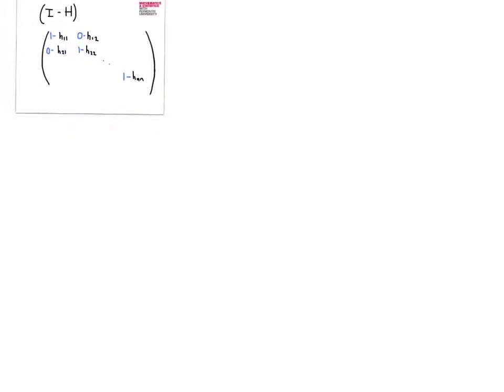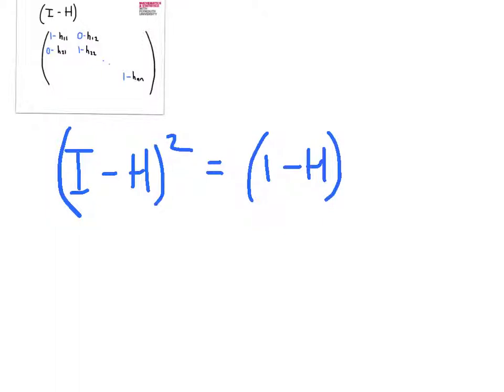That makes the next point very easy to work with. What we're saying is that (I minus H) squared. Let's have a look at what this is. Well, as this thing is symmetric, I want to find the identity minus H multiplied by the identity minus H transpose. Well, it's symmetric, so I can get rid of that transpose, and I can just multiply this thing out.